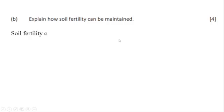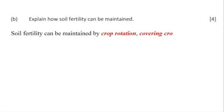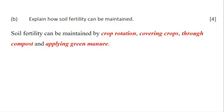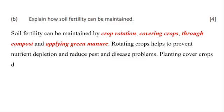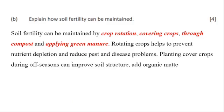Here we can now look at how to write our essay. Soil fertility can be maintained by crop rotation, cover crops, composting, and applying green manure. Rotating crops helps to prevent nutrient depletion and reduce pest and disease problems. Planting cover crops during off-seasons can improve soil structure, add organic matter, and suppress weeds. Composting organic waste can produce nutrient-rich fertilizer for your soil. Applying green manure crops into the soil can add organic matter and nitrogen.